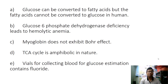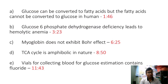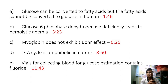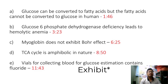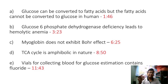For today we will be discussing five very important justifications covering various chapters. Number one: glucose can be converted to fatty acid but fatty acid cannot be converted to glucose in humans — or alternatively, carbohydrate to fat but not fat to carbohydrate. Next: G6PD deficiency leads to hemolytic anemia. Third: myoglobin does not exhibit Bohr effect. Fourth: TCA cycle is amphibolic in nature. And lastly: vials for collecting blood glucose estimation contain sodium fluoride (NaF).